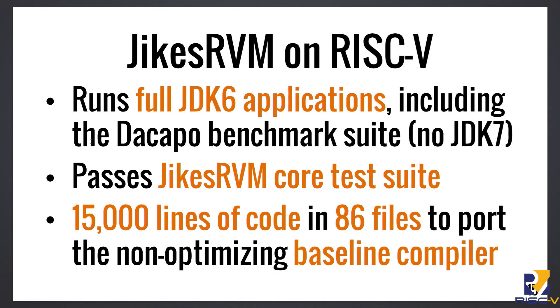Last year, our JICS RVM port for RISC-V was able to run small applications, but still had some missing features and some corner cases that weren't quite working. We fixed this up over the last year, and now it's actually running full Java 6 applications, including the parts of the Dacapo benchmark suite that are supported by JICS, which includes large applications like the Lucene search engine or Ray Tracer. It also now passes the full core test suite of JICS RVM, which means it's almost ready for upstreaming after a little more cleanup. This port so far only includes the non-optimizing baseline compiler, so the optimizing compiler is still a work in progress. At this point it's about 15,000 lines of code and 86 files, so we're hoping to upstream this soon and then move on to the optimizing compiler in the future.